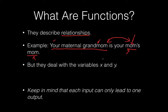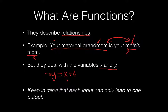But instead of dealing with moms and grandmoms, we'll deal with the mathematical relationships between two variables, x and y. Now don't get scared — x and y are just sort of placeholders. For example, you may see y is equal to x plus 4. All this is saying is that the relationship between x and y is that y is equal to any given x value plus 4. But keep in mind that by definition, a function can have only one output for every given input.